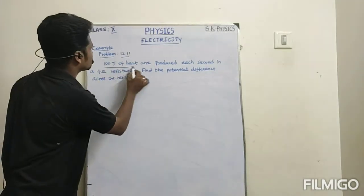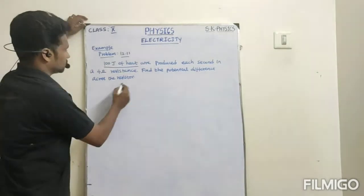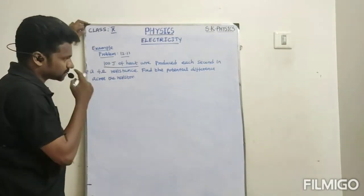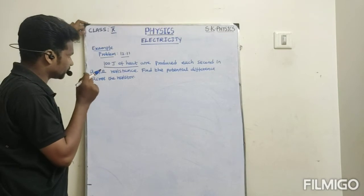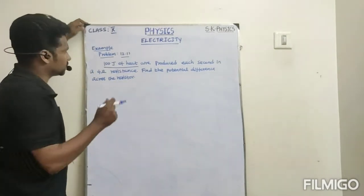100 joules of heat are produced each second in a 4 ohm resistance. Find the potential difference across the resistor.